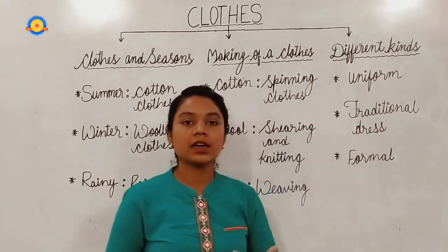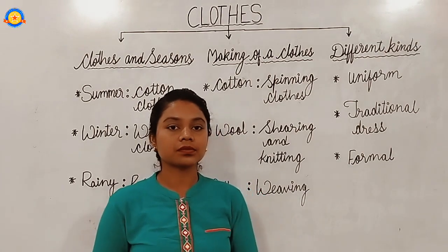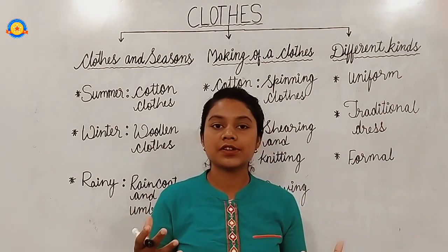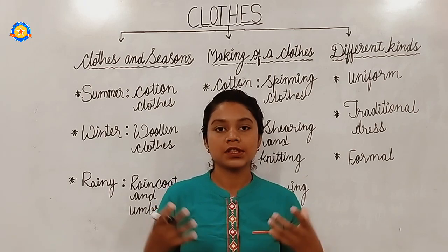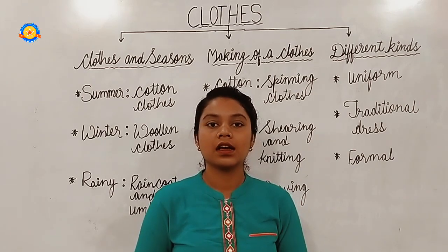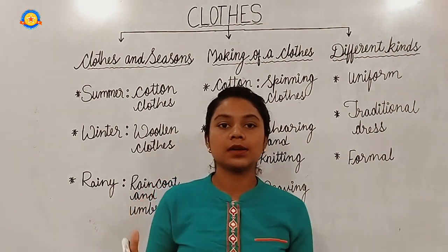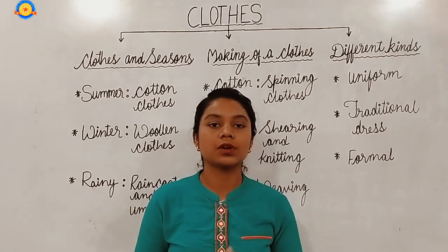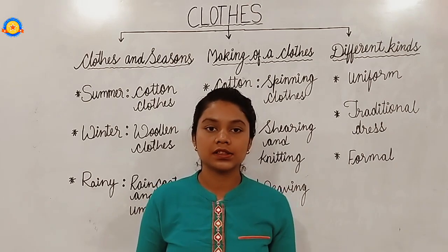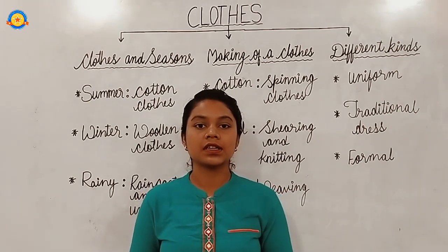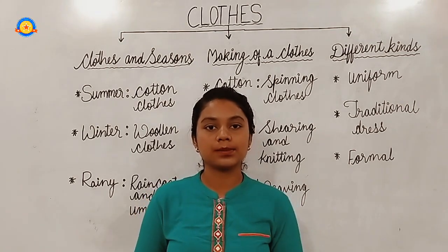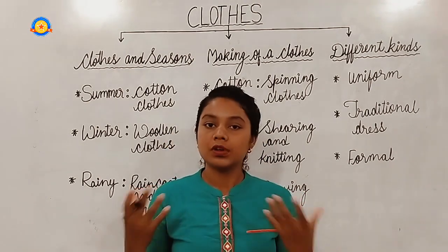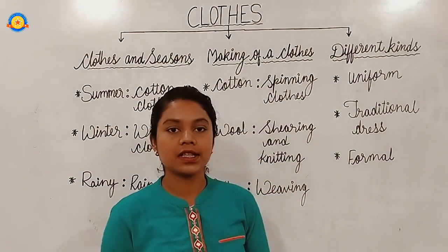What are the different kinds of clothes we have? First, we have uniforms. People wear different special or common dresses for different works. If we see the dress a person wears, we can recognize what work they do. Like doctors have a uniform, students have a uniform, and the pilot, lawyer, and policeman also have common dresses — that is the uniform.